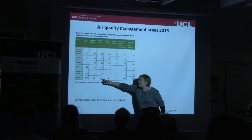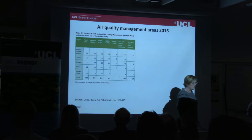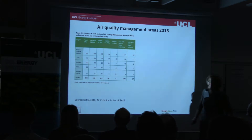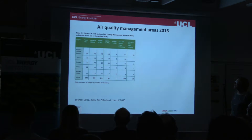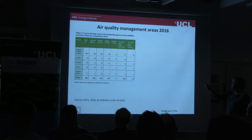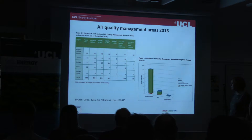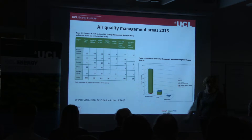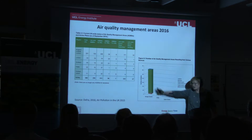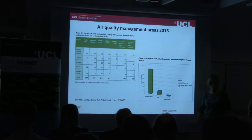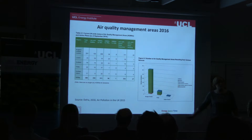There are 613 air quality management areas in the UK for nitrogen dioxide, significantly less for PM, and few for sulfur dioxide. Looking at the sources: green is road transport, so nitrogen dioxide is road transport, road transport for PM. Sulfur dioxide is mainly industrial — the blue is industrial.